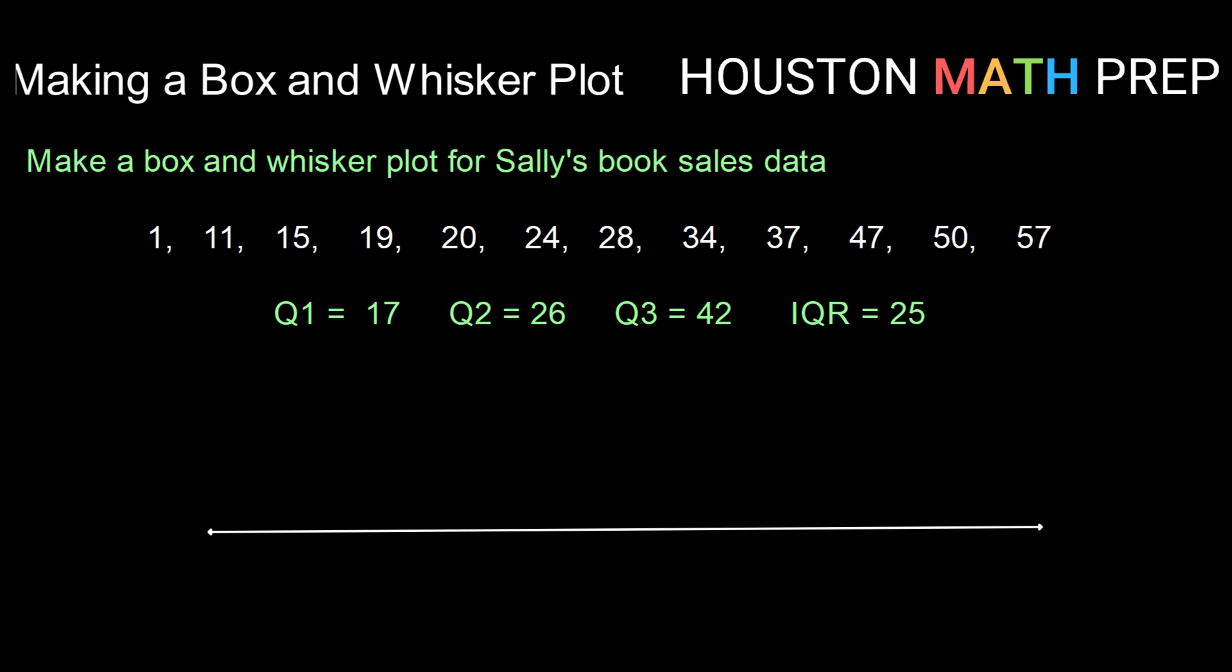so our Q1, Q2, Q3, min, and max, and use that information to construct a box and whisker plot.